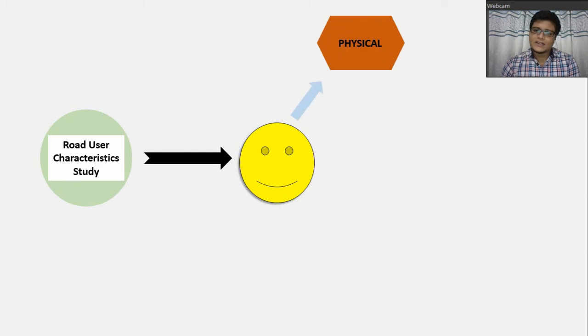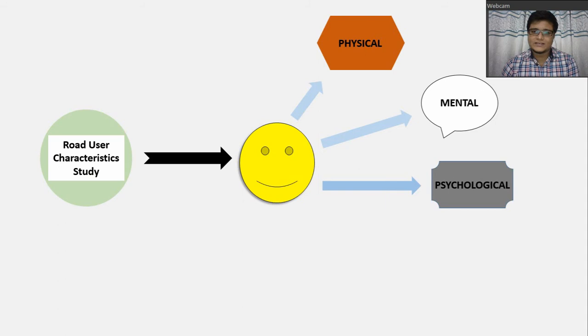One is physical road user characteristic. Second one is mental road user characteristic. Third one is psychological road user characteristic. And the last one is environmental road user characteristic.